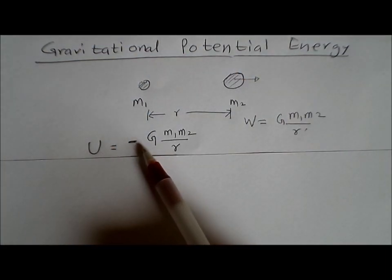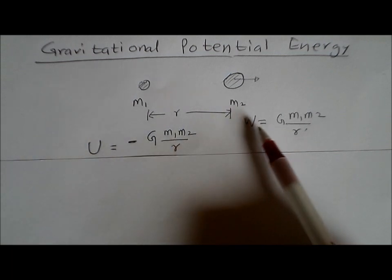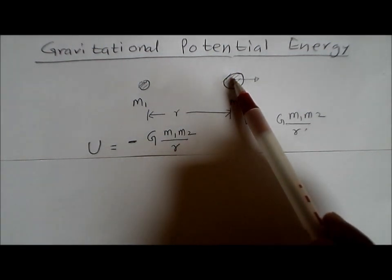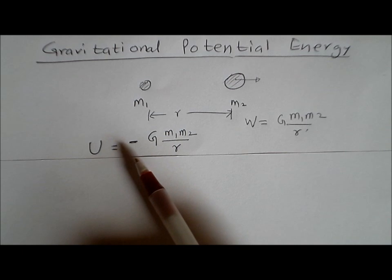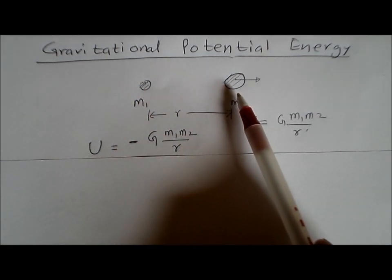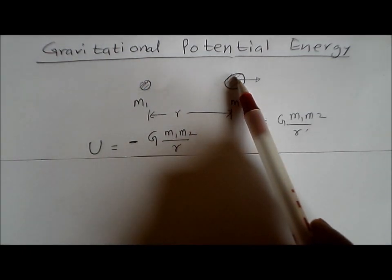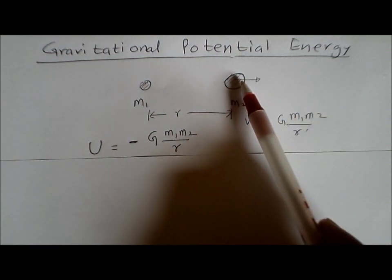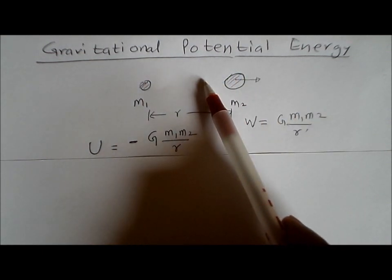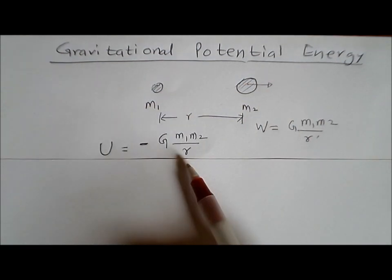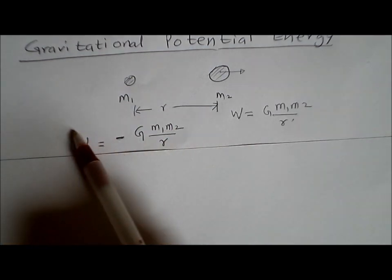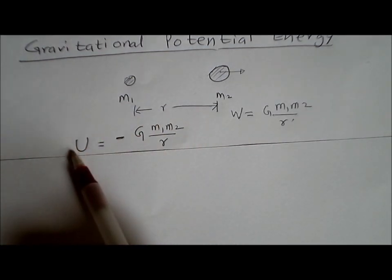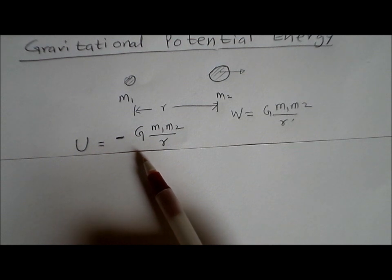That is why the gravitational potential energy has a negative value. There will be work done when taking this mass from this point to infinity, and in terms of magnitude these two numbers are the same. If you are taking it away from this mass, you will have to do some work against the force of attraction. This is the formal definition of gravitational potential energy.